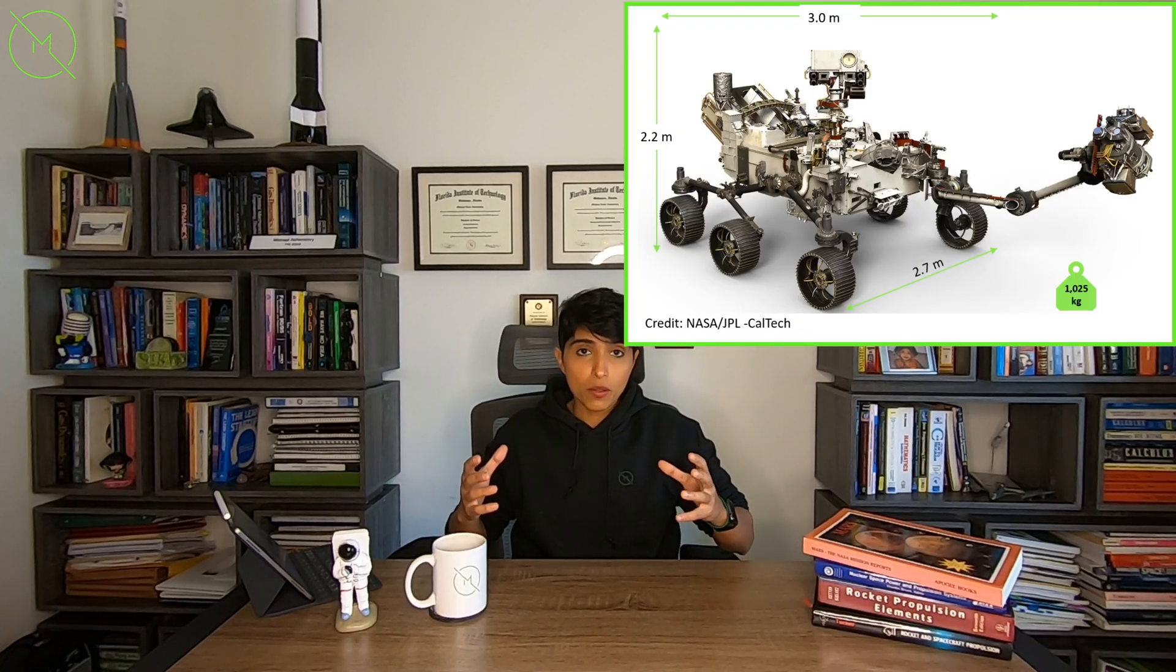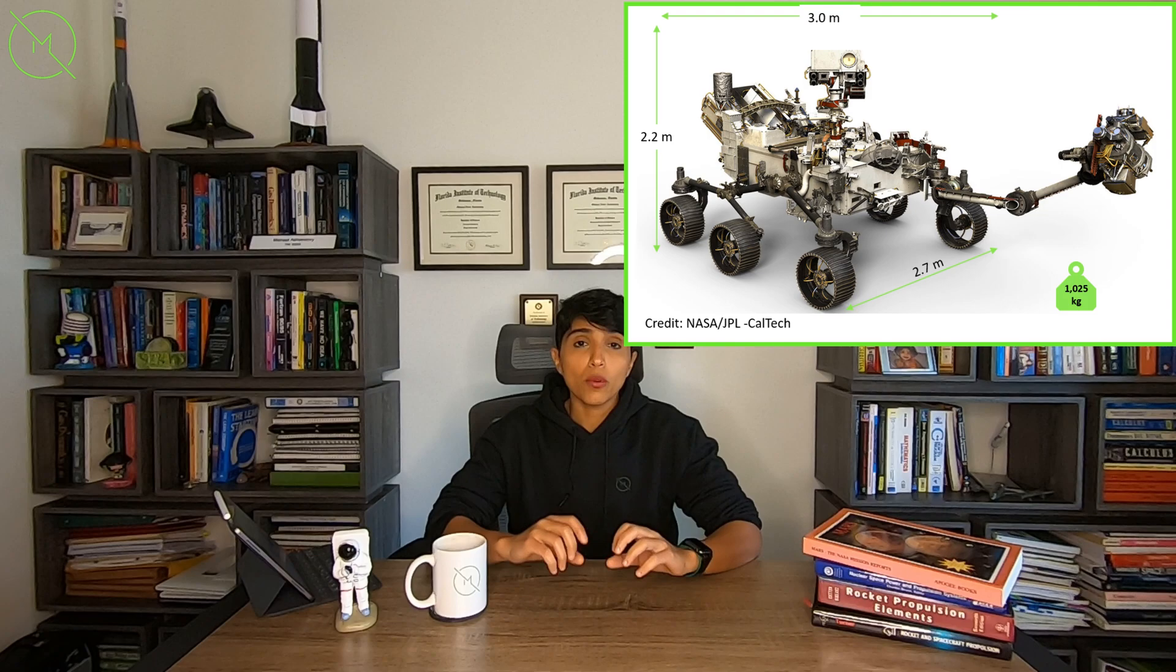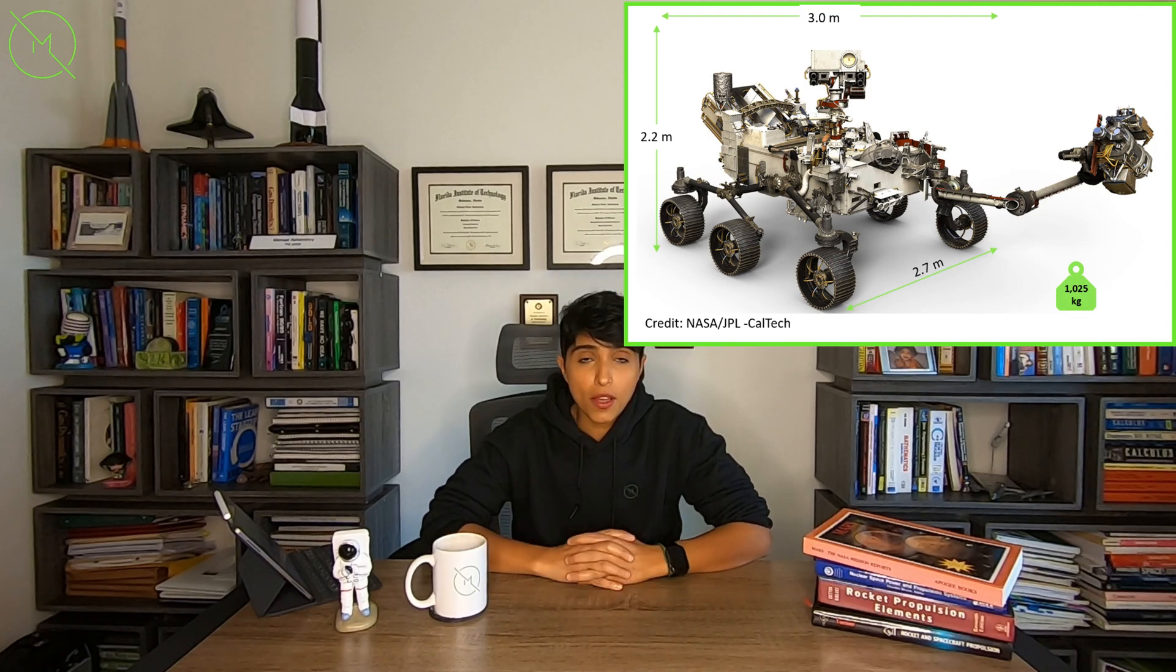Some of you might be wondering, how much does it weigh? Like, is it small? Is it big? So this picture shows you how big the rover is from a dimensional standpoint, as well as that it weighs 1,025 kilograms.